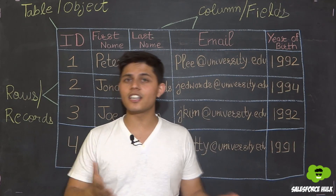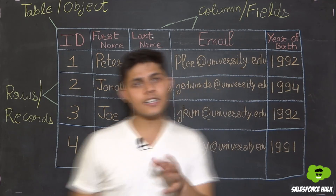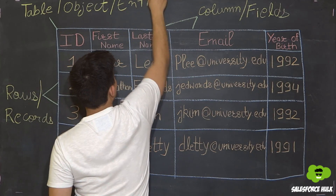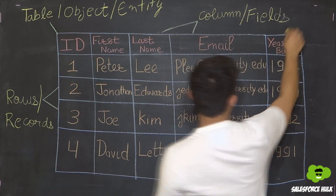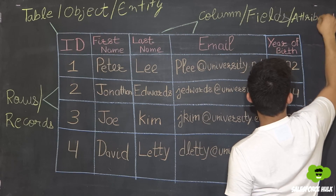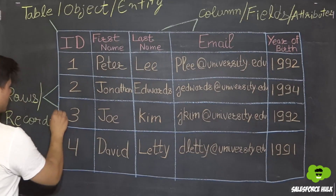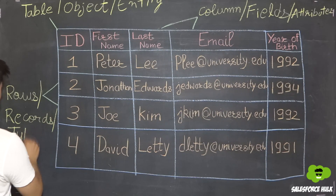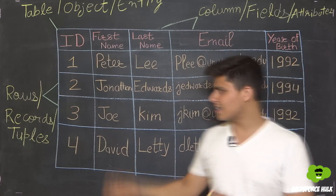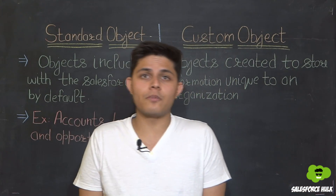Now let's talk about ER diagrams — entity relationship diagrams — or schema. In ER diagrams, entities are created as tables, attributes are created as columns, and rows you say as tuples. Now, as you've understood what objects are, let's discuss what types of objects we have in Salesforce.